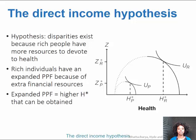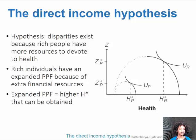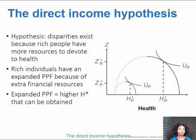Next we have the direct income hypothesis, and it's kind of exactly what you might think it would be. Basically, this hypothesis says that disparities exist because rich people just have more financial resources to throw at health.